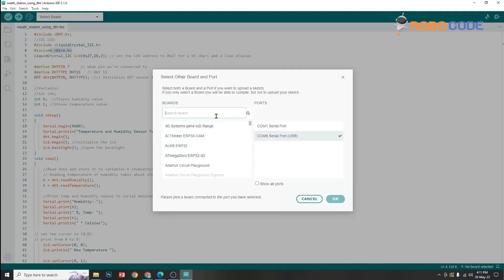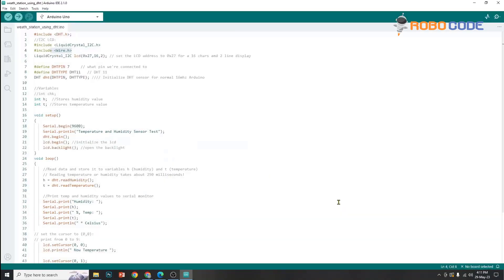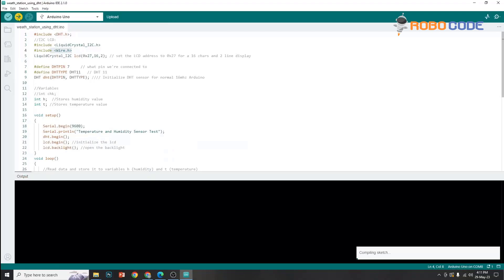Then we will click Select Board, we will select the COM8 serial port USB, and inside the search we will select Arduino UNO and click the OK button. Once that is done, we will upload the code.